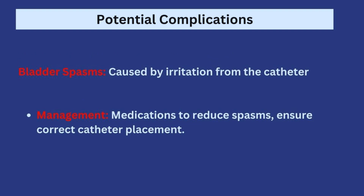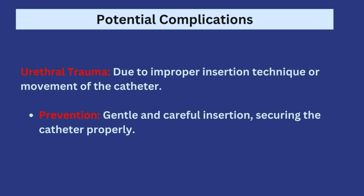Another complication is bladder spasms, caused by irritation from the catheter. Management involves administering medications to reduce spasms and ensuring the catheter is correctly placed. Urethral trauma can also occur — possibly from a rough insertion procedure or from the patient moving around and causing dragging and traction on the urethra. Prevention involves gently and carefully inserting the catheter, securing it properly, and instructing the patient to be careful with movement and not to pull on the catheter.